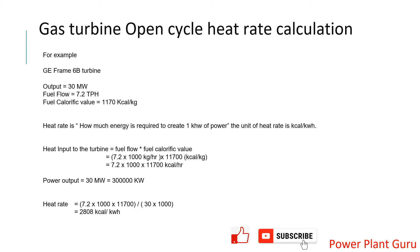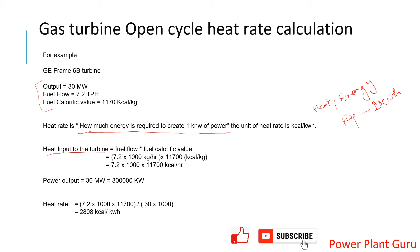Let us take an example of an open cycle heat rate calculation. Heat rate is basically finding out how much energy is required for one unit of power — energy required per one kilowatt-hour of electricity produced. I'm taking the example of a Frame 6 machine with an output of roughly 30 megawatts and a fuel flow of 7.2 tons per hour of natural gas.